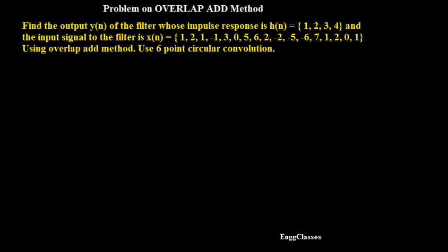Hello everyone, welcome to NG Classes YouTube channel for a video lecture series on digital signal processing. In this video we will consider a problem on overlap-add method. It says: find the output y[n] of the filter whose impulse response h[n] is given and the input signal x[n], which is a long data sequence, is given as shown. Using overlap-add method, use 6-point circular convolution.